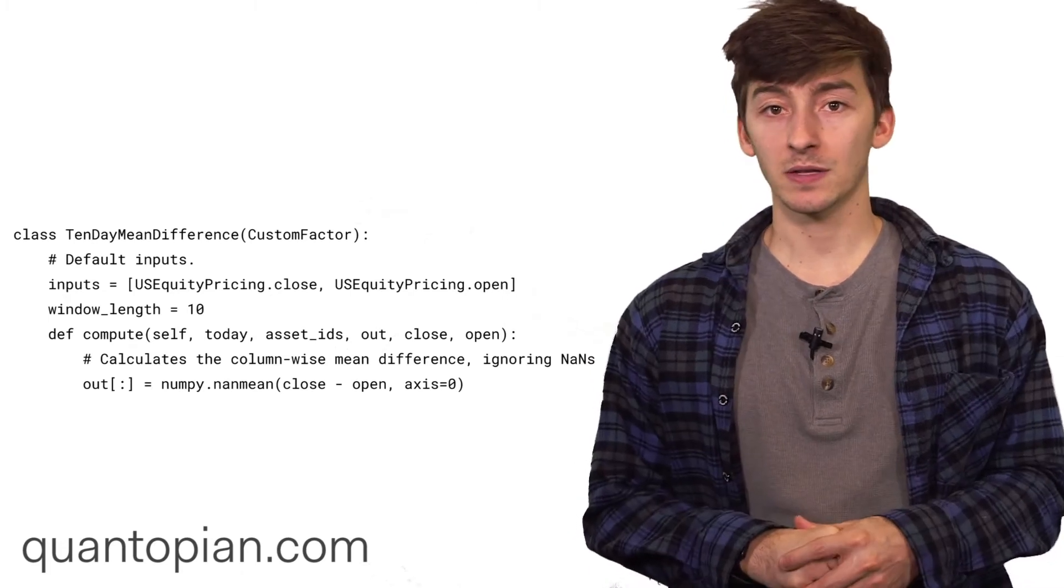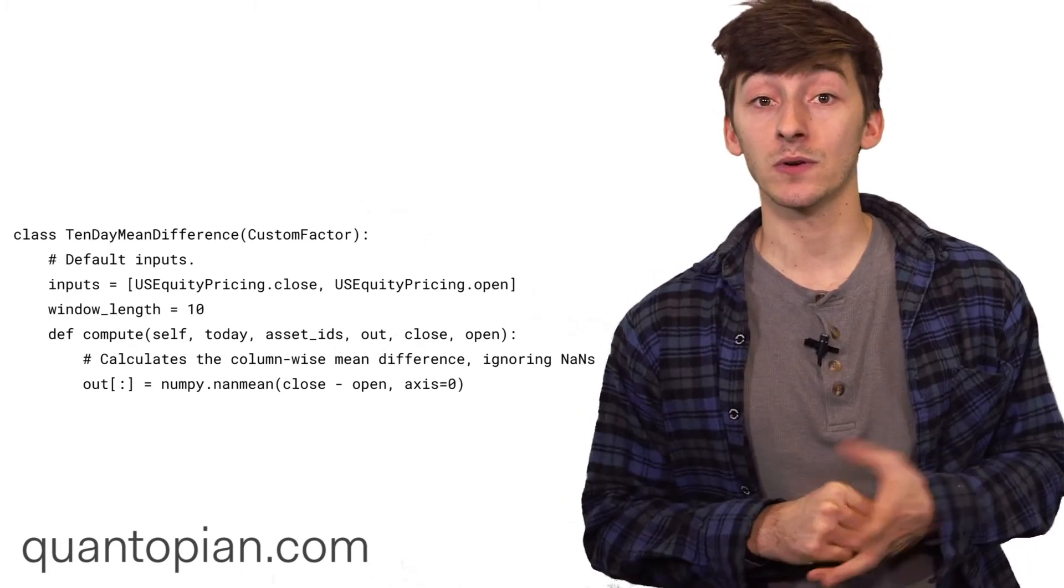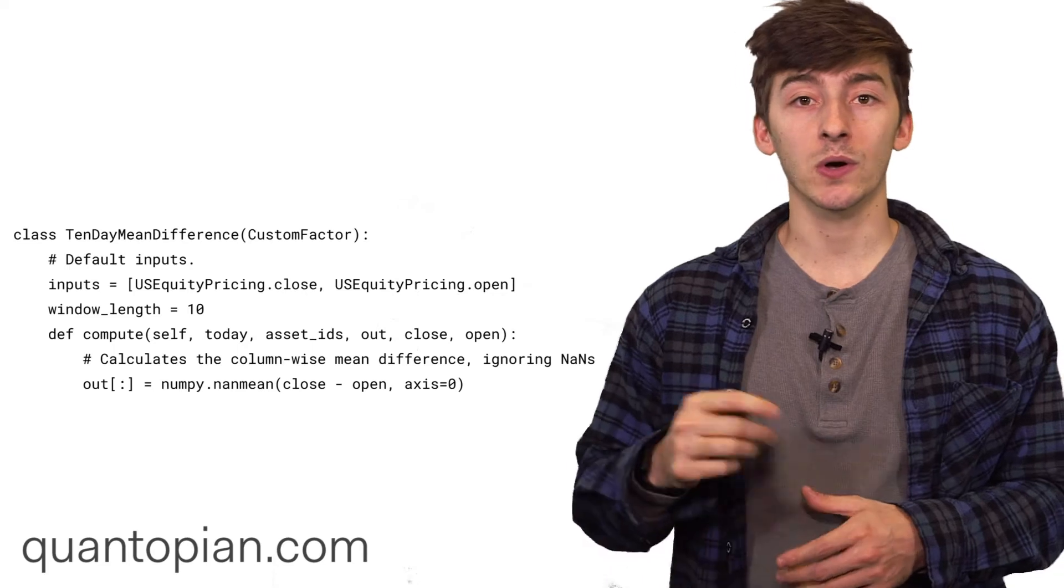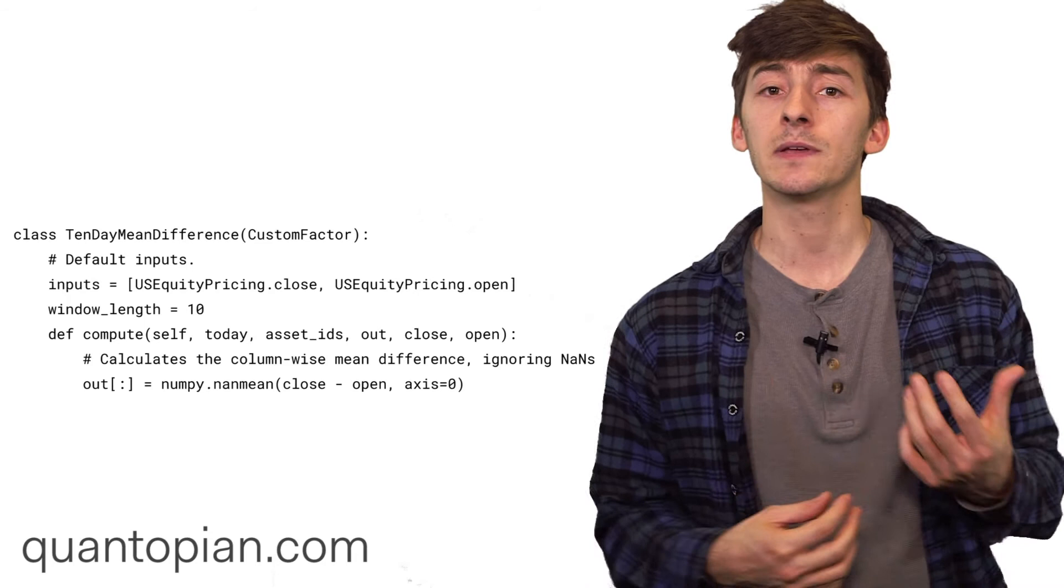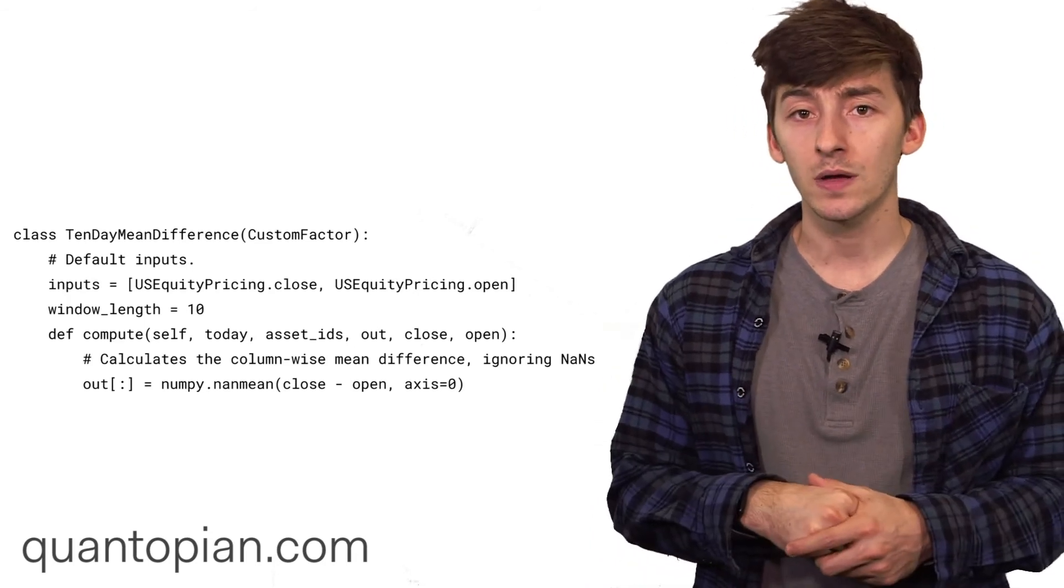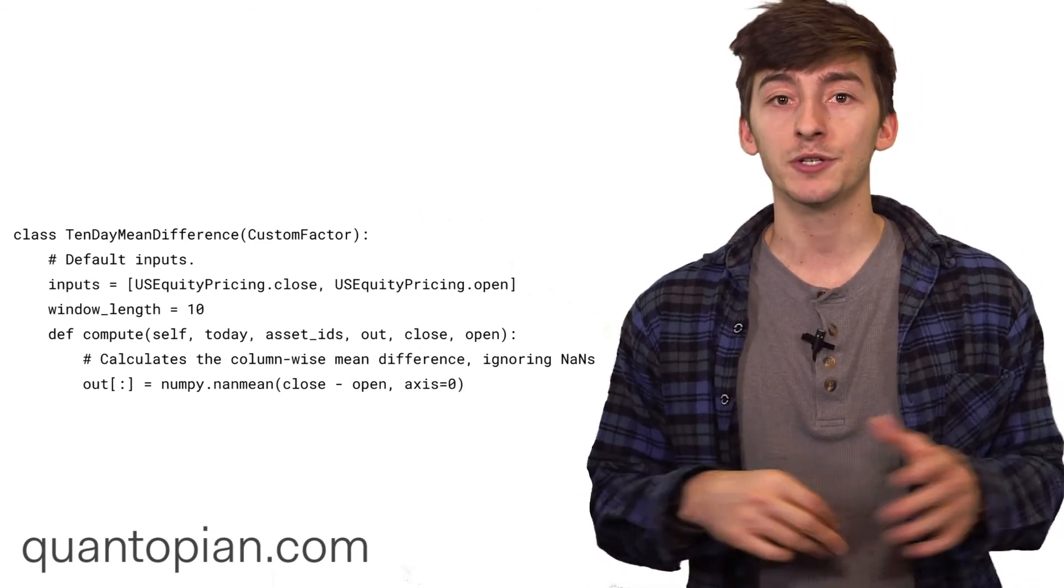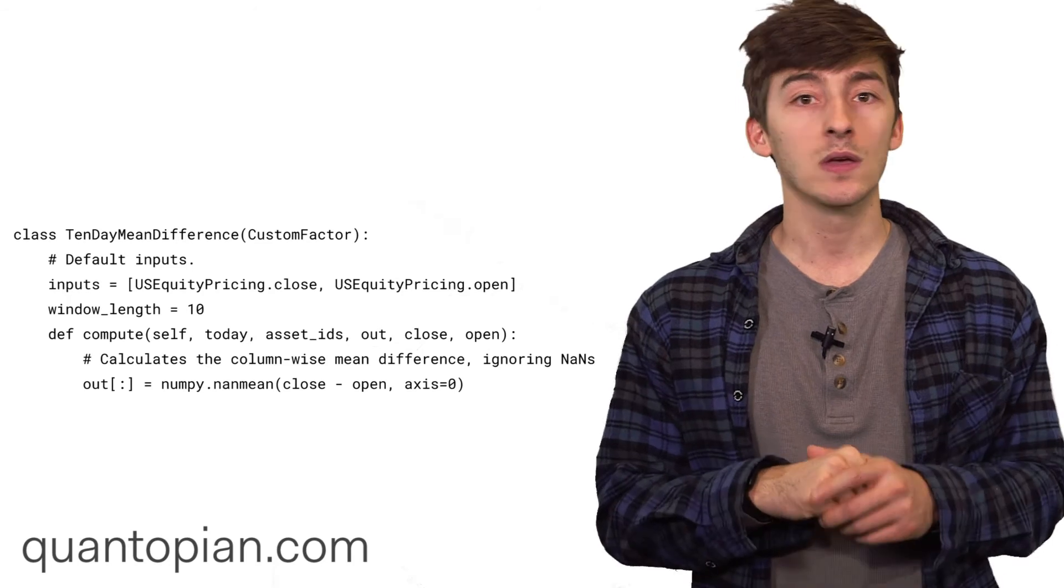This results in a factor that's similar to any other factor that is already predefined. You can use all of the methods that are attached to the predefined factors, such as winsorization and any sort of ranking or filtering that you want, on a custom factor. It's all just part of the general factor class. Ideally what this gives you is one value per asset every single day over which you run the pipeline.